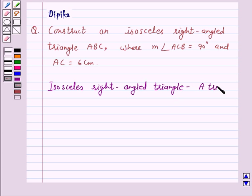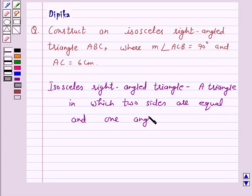This is a triangle in which two sides are equal and one angle is 90 degrees.